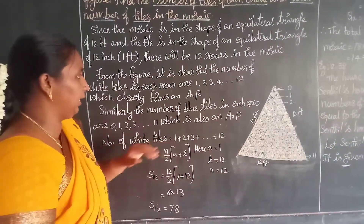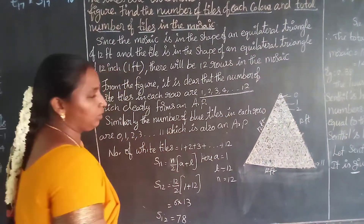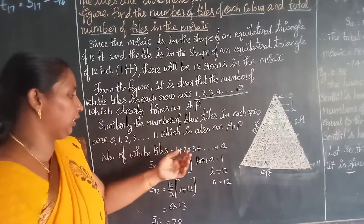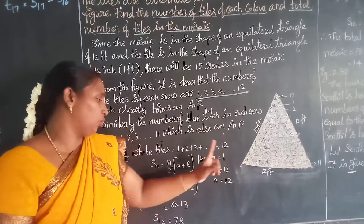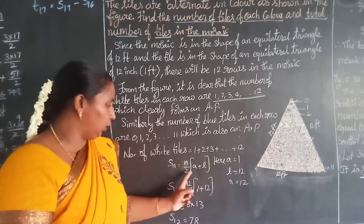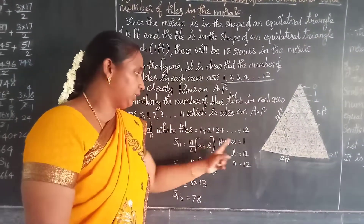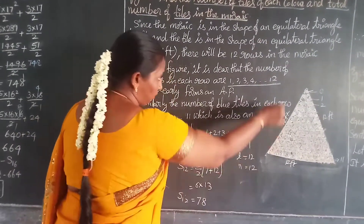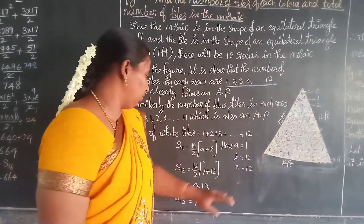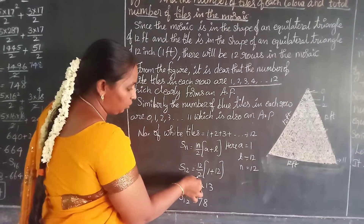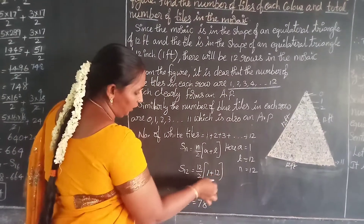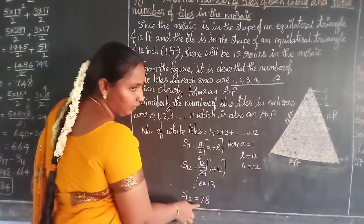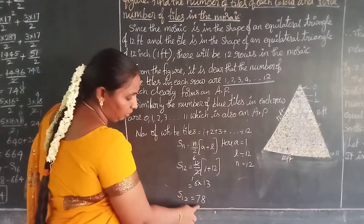Number of white tiles: S12 = 12/2 × (1 + 12) = 6 × 13 = 78. So the number of white tiles equals 78. Next, for the blue tiles: 0 + 1 + 2 + ... + 11. Using the same formula with A = 0, L = 11, and N = 12.